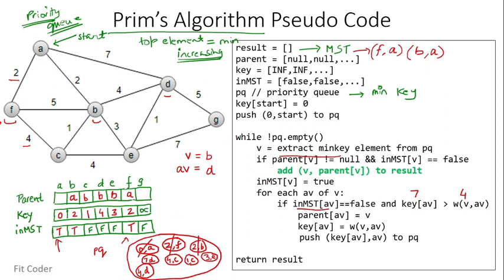We extract the minimum element (1, C). V becomes C. Parent of C is B, inMST of C is false, so we add edge C-B to the result and set inMST of C to true. For adjacent vertices: F and B are already in the MST, so we skip them. For E — inMST is false, key of E is 3, but edge weight C-E is 4, so the condition is not true and we do not update. All adjacent vertices of C have been processed.